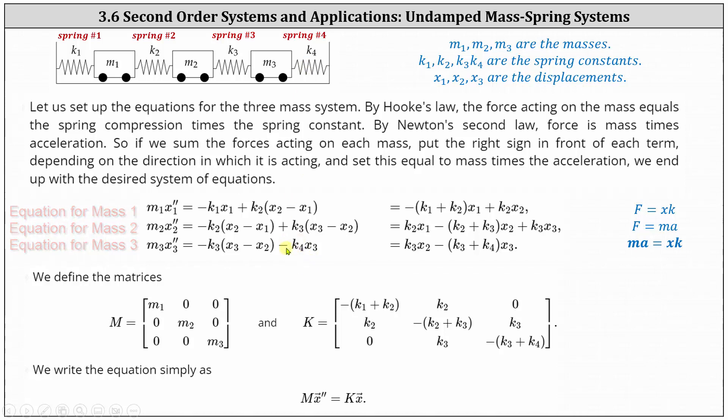For the next step, on the right, we gather the X1, X2, and X3 terms, and now to write an equation, we let matrix M be a three by three matrix containing the coefficients of the second derivatives along the main diagonal. We have M1, M2, and M3 along the main diagonal for matrix M, and then matrix K contains the coefficients of X1, X2, and X3 in a three by three matrix.